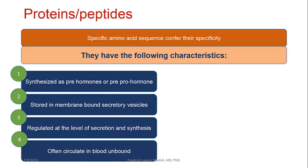Characteristic four: they often circulate in blood unbound. They don't need any plasma protein carrier. The reason is that a large part of plasma is water, and protein hormones are water-soluble, so they can easily be carried in plasma. This is why they don't need to be facilitated by any carrier protein.